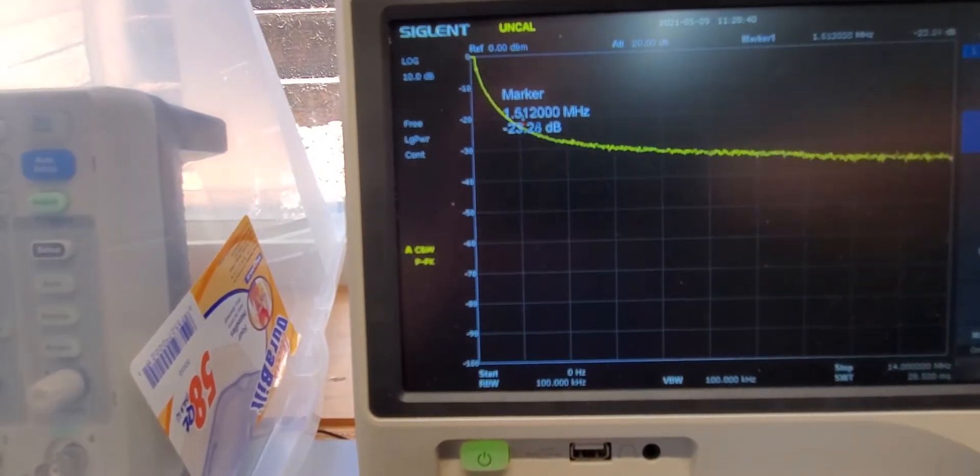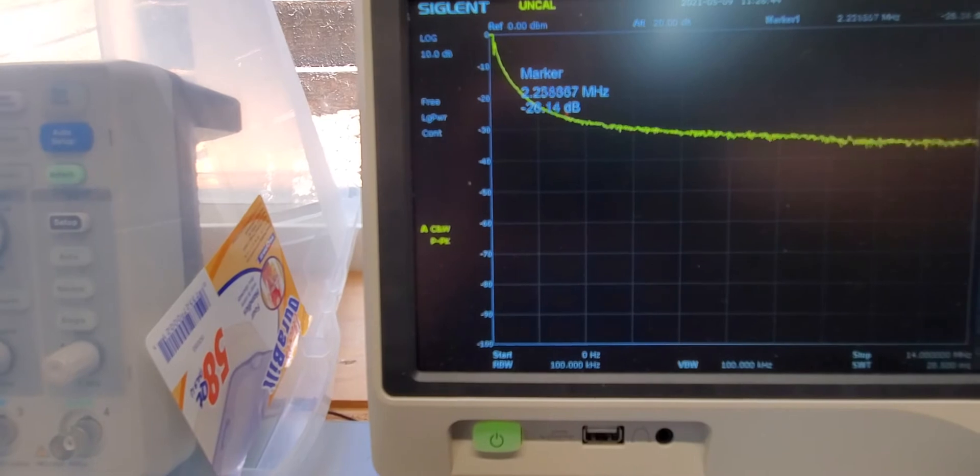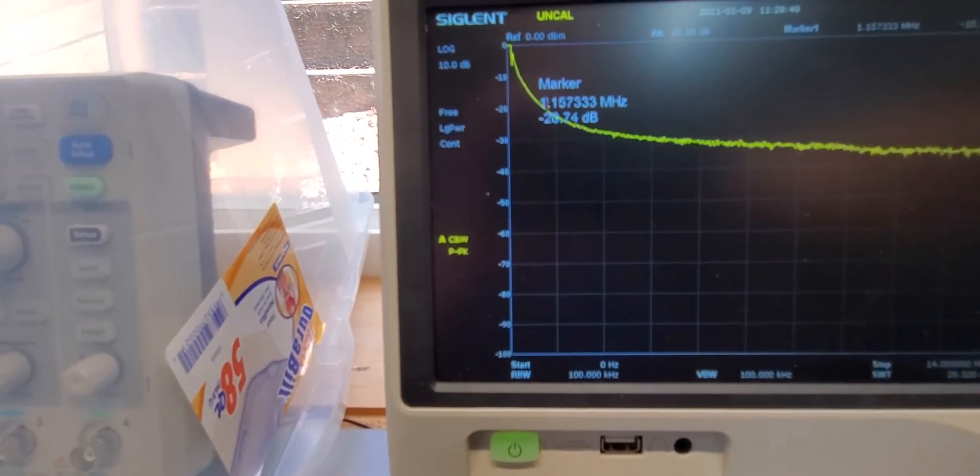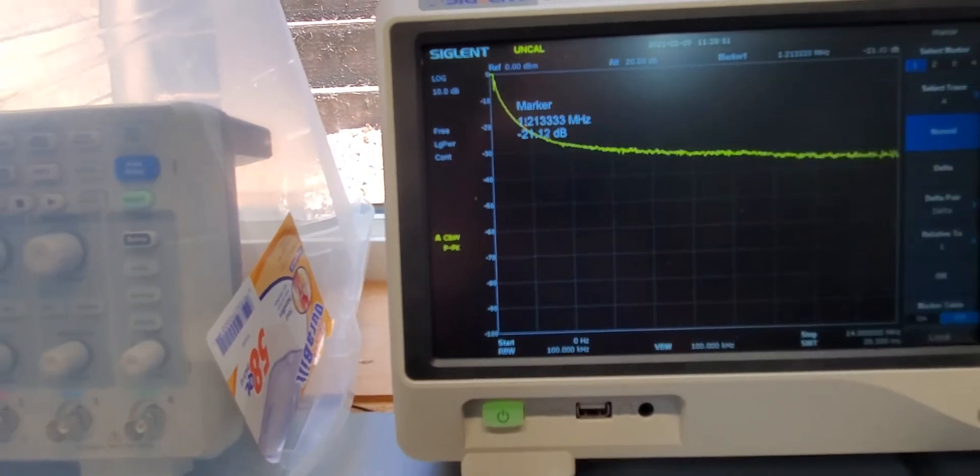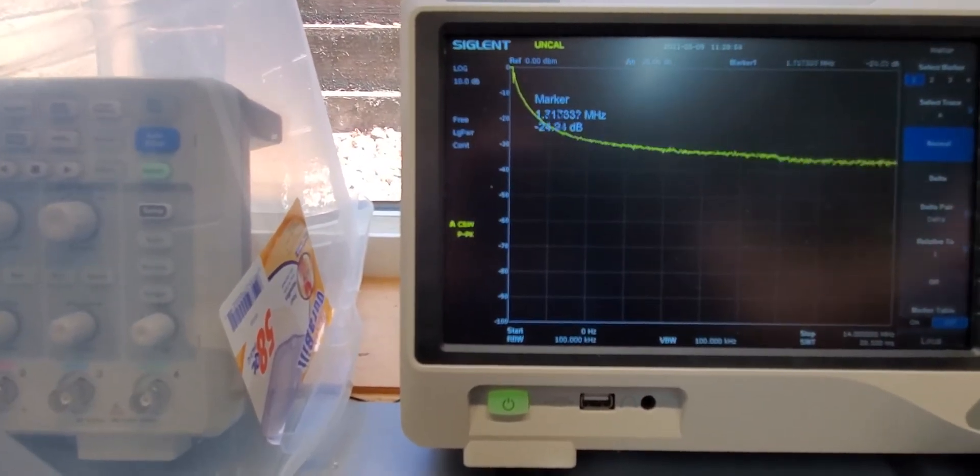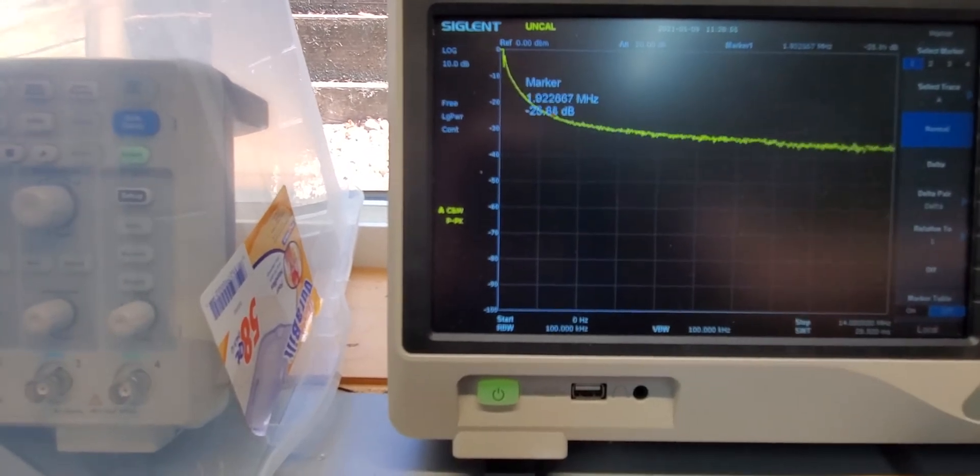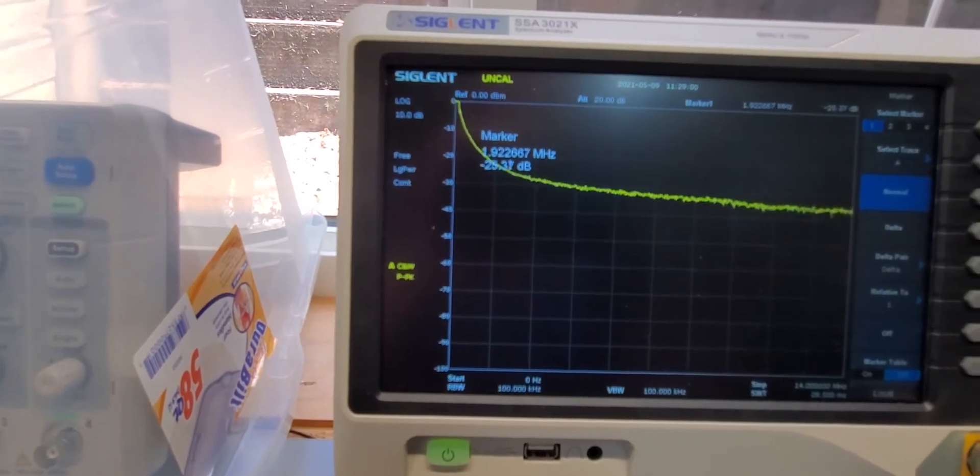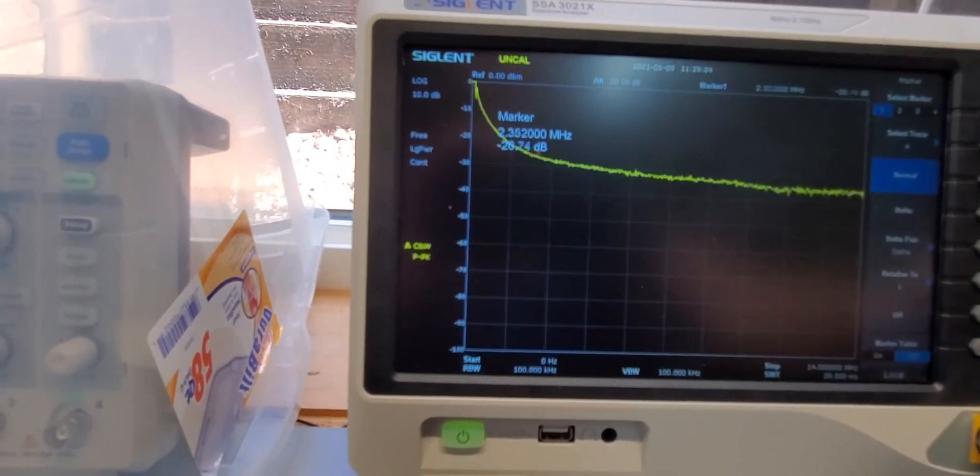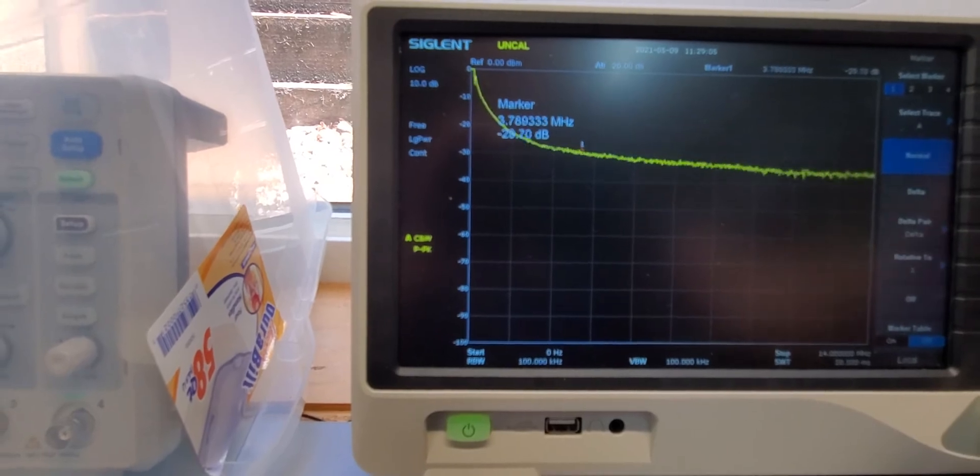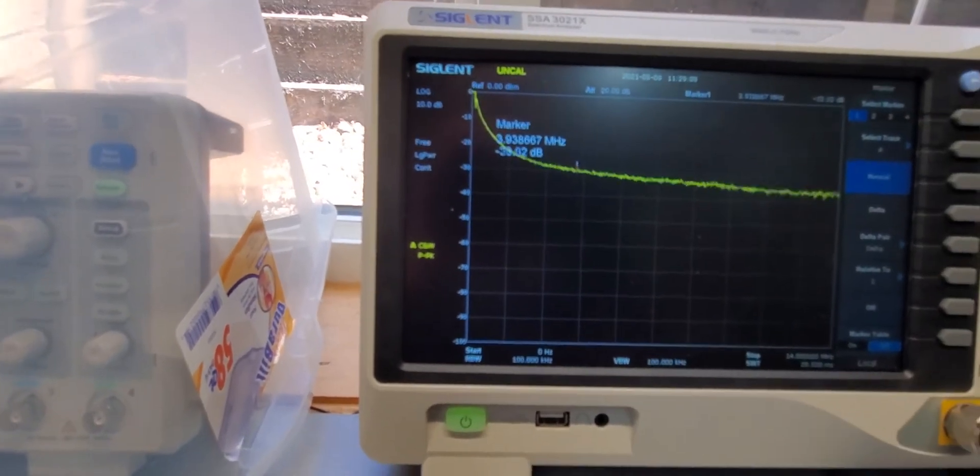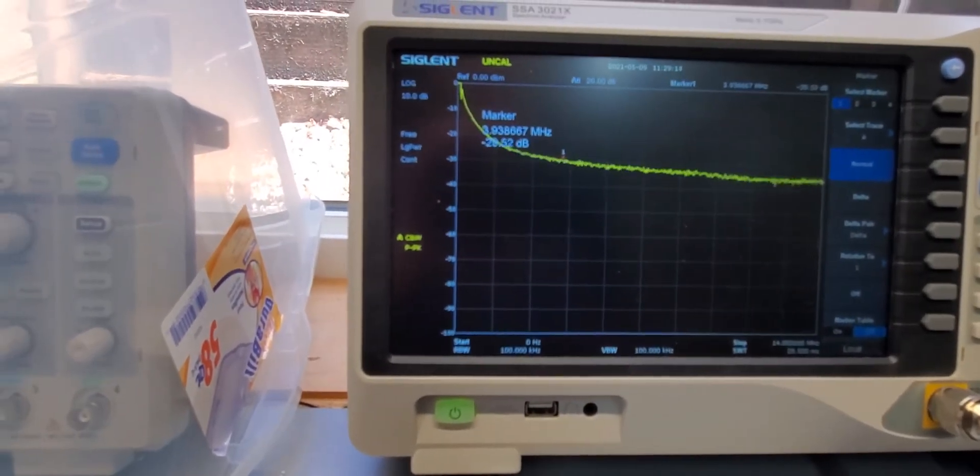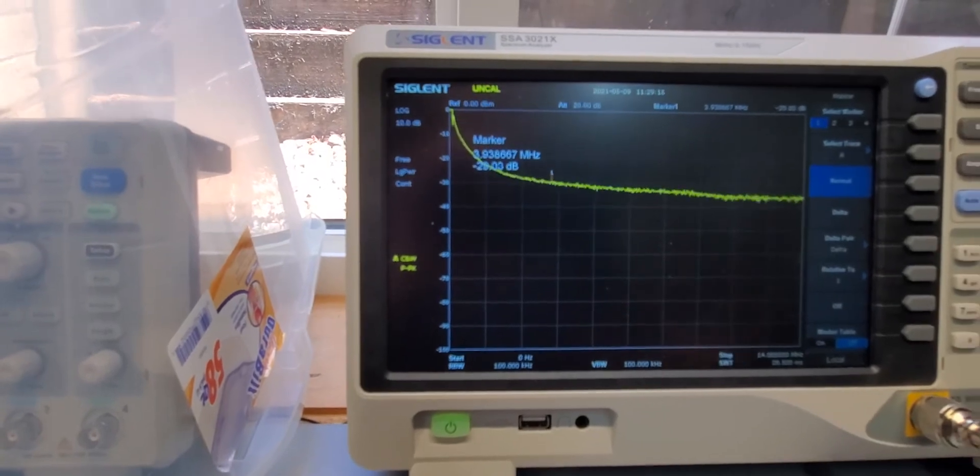For lower bands than 160 meter I wouldn't consider that core. Even 160 I wouldn't consider it. That would be 1.9. I would go with the 31 core on that for sure. If you're just doing 80 meters occasionally and you're mostly on 20 meters, then it's probably a better core to go with, slightly better.